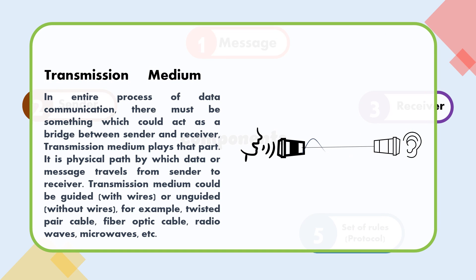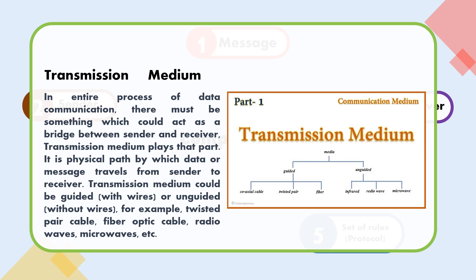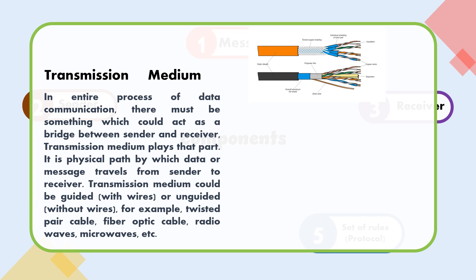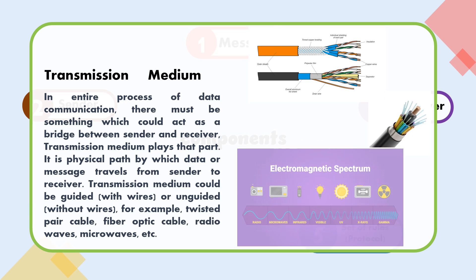In the entire process of data communication, there must be something which could act as a bridge between sender and receiver — transmission medium plays that part. It is the physical path by which data or a message travels from sender to receiver. Transmission medium could be guided (with wires) or unguided (without wires), for example, twisted pair cable, fiber optic cable, radio waves, microwaves, etc.